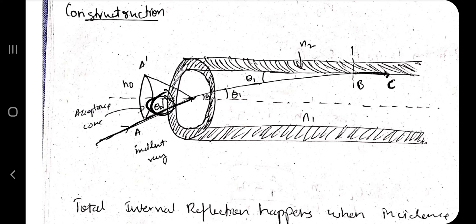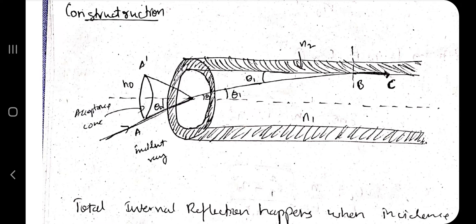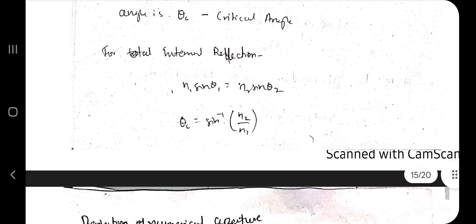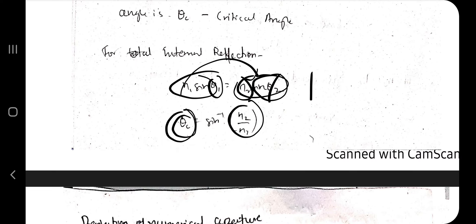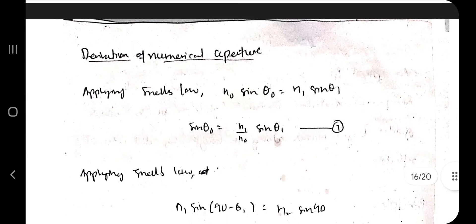The optical fiber structure has three regions: the core (refractive index n1), the cladding (refractive index n2), and the outside medium (n0). When light enters at angle theta-naught, it undergoes total internal reflection at the core-cladding interface. Since n2 is lower than n1, total internal reflection occurs. The critical angle theta-c equals sine-inverse of (n2/n1), derived from Snell's law where theta2 equals 90 degrees, making sine(theta2) equal to 1.